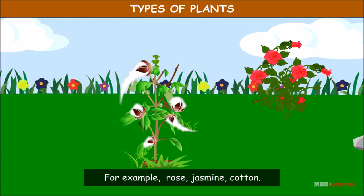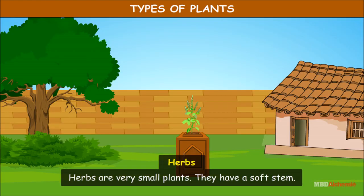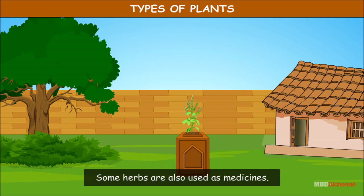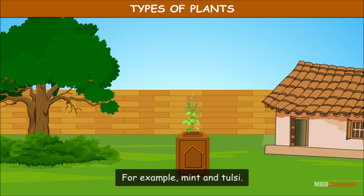Herbs are very small plants. They have a soft stem. Some herbs are also used as medicines. For example, mint and tulsi.